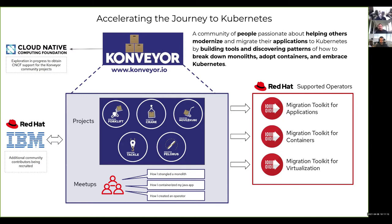In that journey there are different paths. Moving VMs into KubeVirt could be a path that sets you at the base camp where you can have your VMs next to your containers, and moving containers from one cluster to another is another path. There are five projects in Conveyor: Forklift to move VMs, Crane to move containers, Move to Kube to migrate from environments like Cloud Foundry to Kubernetes, Tackle to analyze and assess applications for modernization, and Pelorus to measure improvements along the journey.